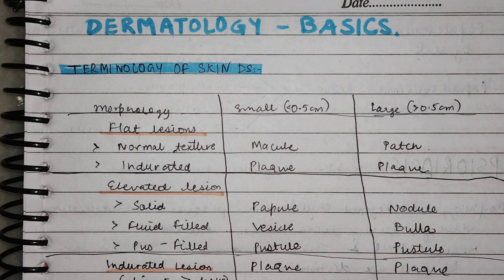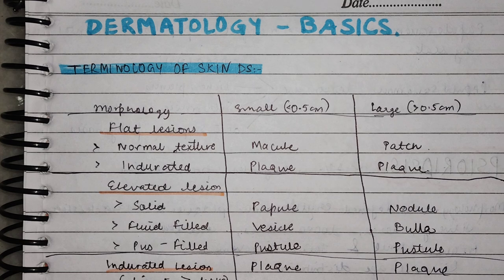First of all, the basic terminology we are going to cover for skin disease. These are: macule, plaque formation, papule, vesicle, pustule formation, vesicles, and bullae. There are some differences between these terms.